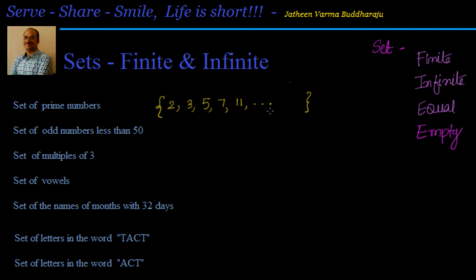Next example: set of odd numbers less than 50. I will start with 1, 3, 5 — but I know what my last odd number is, so I can continue the list and end it. My last odd number is 49. So this list has a clear boundary.